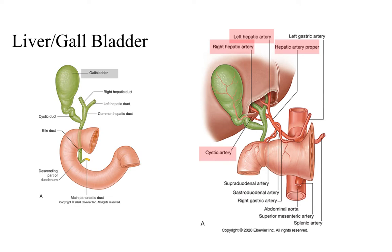One of the liver's primary jobs is to produce bile. When it produces bile, it goes down through the hepatic ducts — the right and left hepatic ducts — which empty into the common hepatic duct. These are called hepatic ducts because they're coming from the liver. A lot of this bile then goes into the cystic duct, which heads into the gallbladder. So the liver concentrates and stores bile inside the gallbladder, and then the gallbladder releases bile when it's needed by the digestive system.